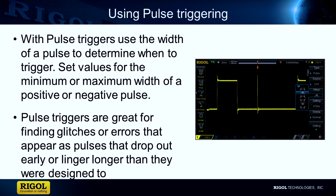Pulse triggering is a trigger method used to differentiate pulses by their width. For signals with occasional variations in pulse size that are causing errors, pulse triggering is a great way to easily identify which pulses you want to look at to stabilize the waveforms on the oscilloscope.